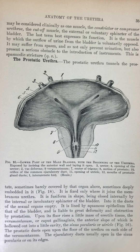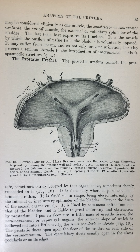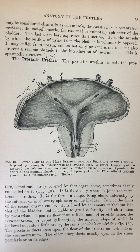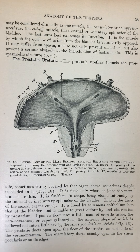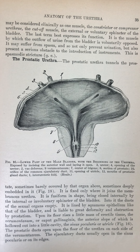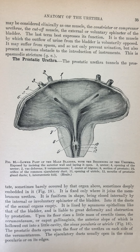The prostatic urethra tunnels the prostate, sometimes barely covered by that organ above, sometimes deeply embedded in it, as shown in figure 18. It is fixed only where it joins the membranous urethra. It is fusiform in shape, being closed internally by the internal or involuntary sphincter of the bladder. Into it, the ducts of the sexual organs empty. It is lined by squamous epithelium, like that of the bladder, and is liable to great deformity and obstruction by prostatism.